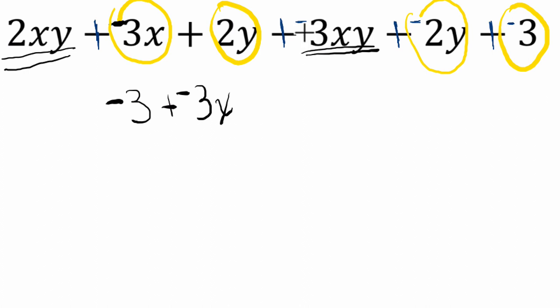The coefficient, the number in front of the variables tells me how many groups of that variable we have. So here we have two groups of the variables x and y and here we have negative 3 groups. So it's just like having 2 but then losing 3 and that's the same thing as having negative 1 groups of xy.